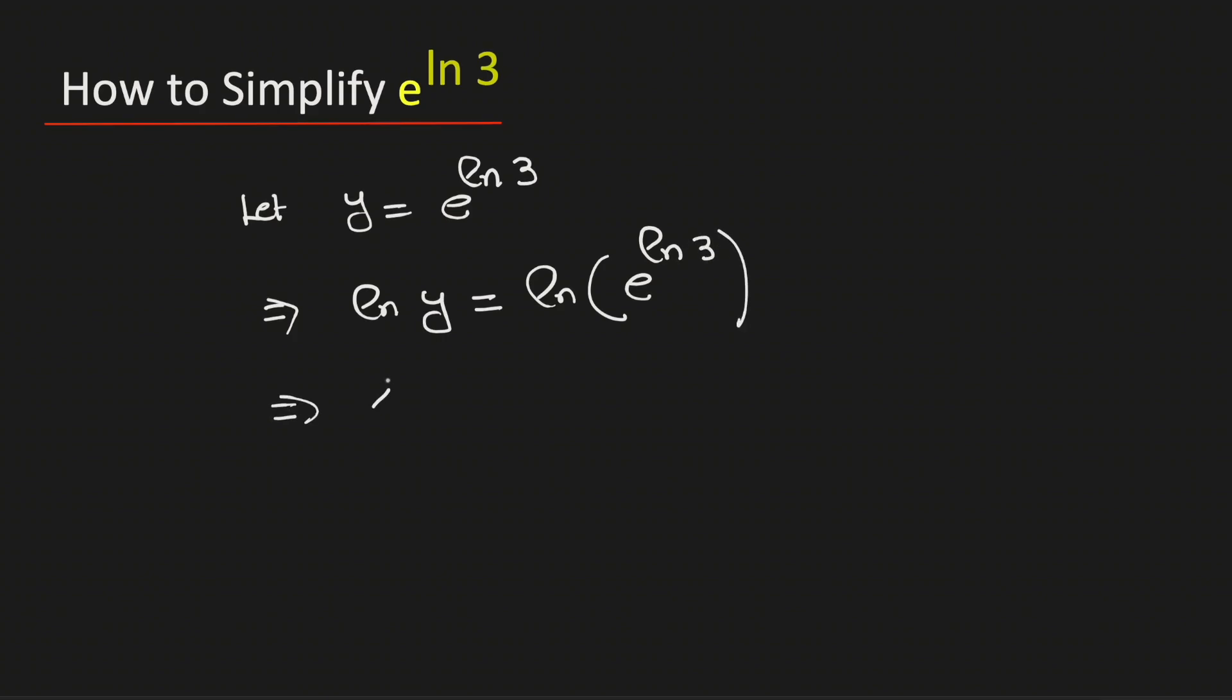Now write ln of y as it is. And using the properties of logarithms, this power will come in front of this logarithm. So we have ln of 3 times ln of e.